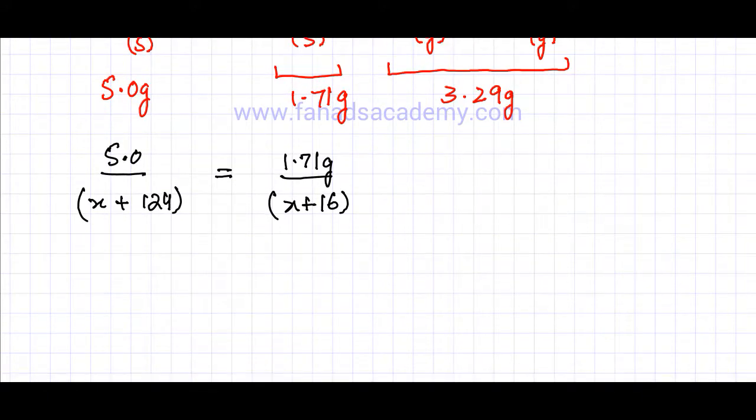So if I do that, it's going to be 5X. 5 times X plus 16 times 5 which would be equal to 80. That would be 5X plus 80. Then I have 1.71 multiplied by X plus 124 times 1.71. Let me use my calculator. 124 multiplied by 1.71, and that gives me 212.04.